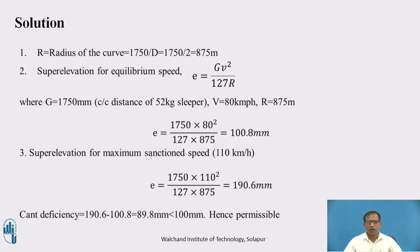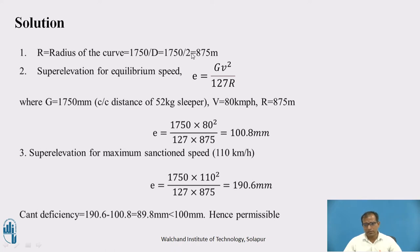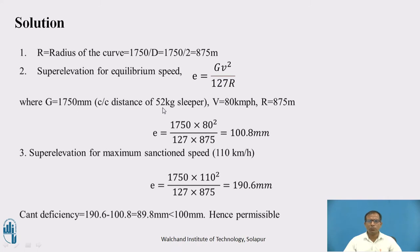First, as per the steps, calculate the equilibrium super elevation. The radius of the curve is calculated taking a 30.5-meter chord length: R equals 1750 divided by D, where D is the degree of the curve, giving R equal to 875 meters. The broad gauge distance G is 1750 mm, center-to-center distance of 52 kg sleeper. Using 1750 mm, the speed value, and R, the equilibrium super elevation comes to 100.8 mm.